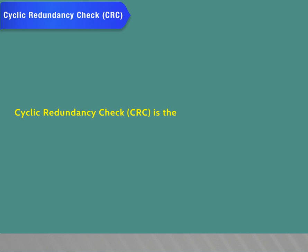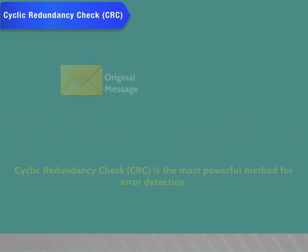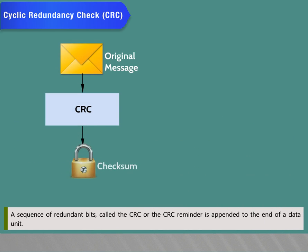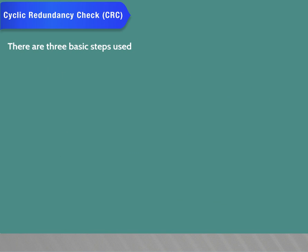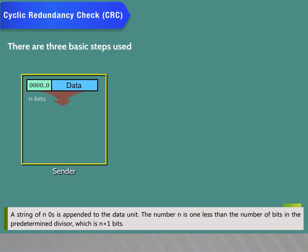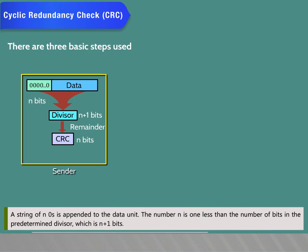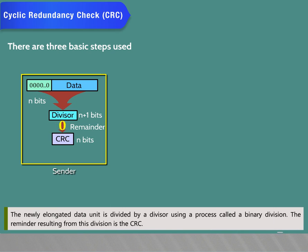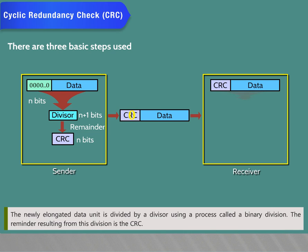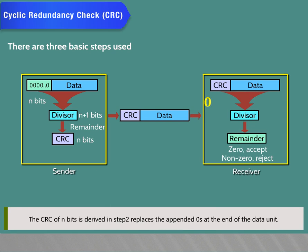Cyclic redundancy check (CRC) is the most powerful method for error detection. A sequence of redundant bits called the CRC remainder is appended to the end of a data unit. There are three basic steps: a string of n zeros is appended to the data unit, where n is one less than the number of bits in the predetermined divisor (n+1 bits). The newly elongated data unit is divided by the divisor using binary division. The remainder resulting from this division is the CRC, which replaces the appended zeros at the end of the data unit.